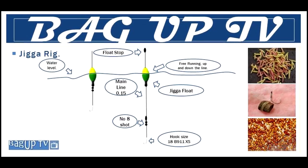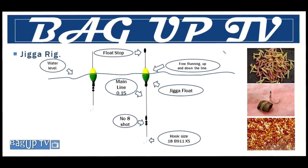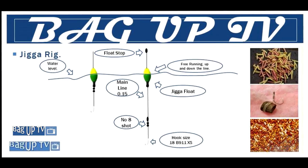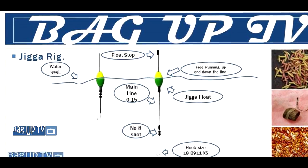When you're setting this up, you want to put a float stop onto the line first, then the jigger float, then another float stop, and then two or three number 8 shot underneath the next float stop.